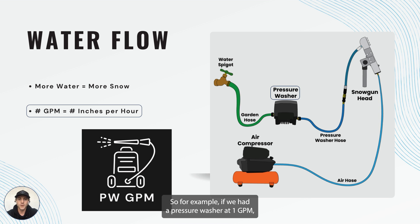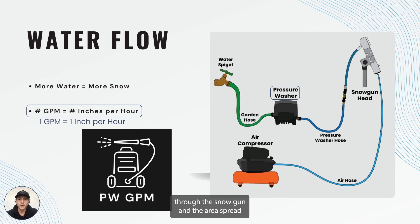So for example, if we had a pressure washer at one GPM, we can expect to make one inch per hour of snow through the snow gun, and the area spread will be different depending on the snow gun design.